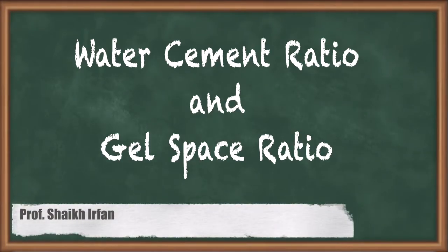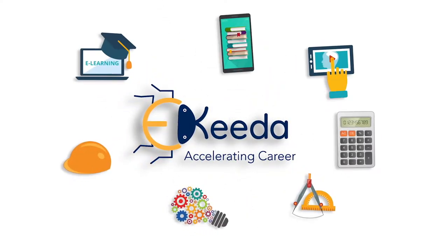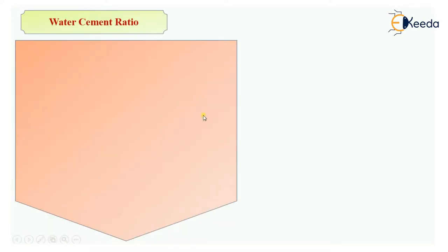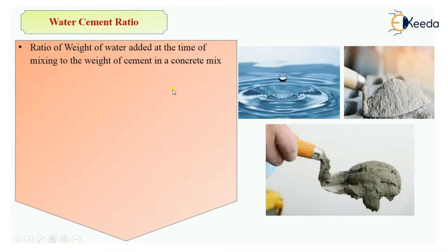Hello everyone, my name is Shakir. In this video we will be learning about water-cement ratio and gel space ratio. Water-cement ratio is defined as the ratio of weight of water to the weight of cement — that is, the ratio of weight of water added to the cement paste or concrete mix to the weight of cement in a concrete mix.